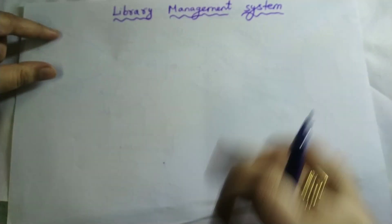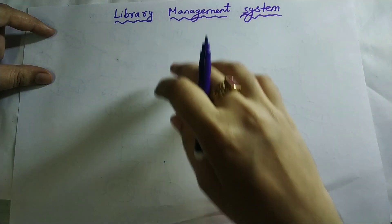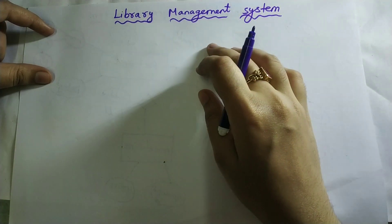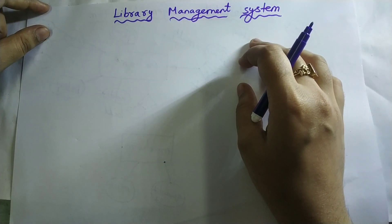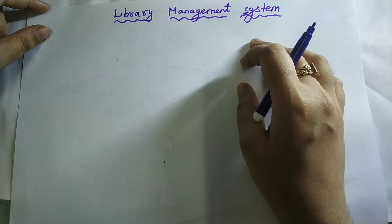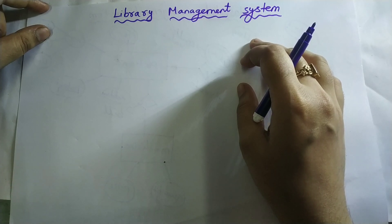In this video, let us learn to draw an ER diagram for a library management system. The first step is we need to choose the entities. Entity is nothing but an object with physical existence or conceptual existence.